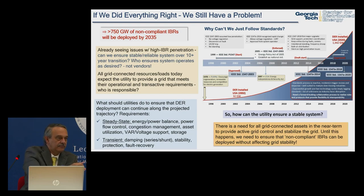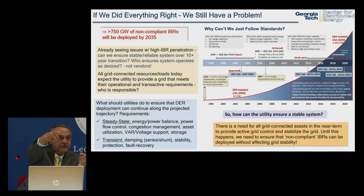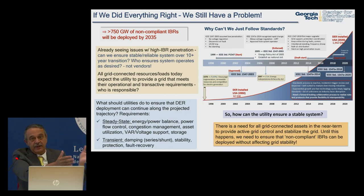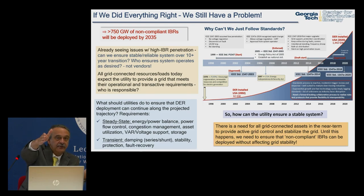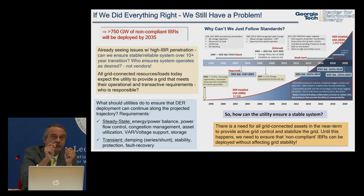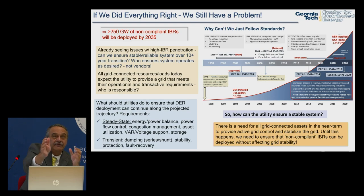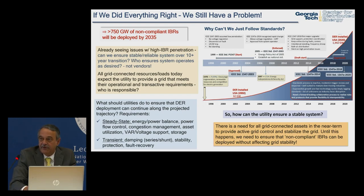Even if we could get everything right today, the standards process is entirely backward-looking. There's a delay of 10 to 15 years between problem identification and a standard being implemented at scale. Even with a solution today, by the time it's deployed another 750 gigawatts of non-compliant equipment would already be connected. There's a need for an interim solution that can be easily deployed to stabilize the grid while other solutions are being developed.